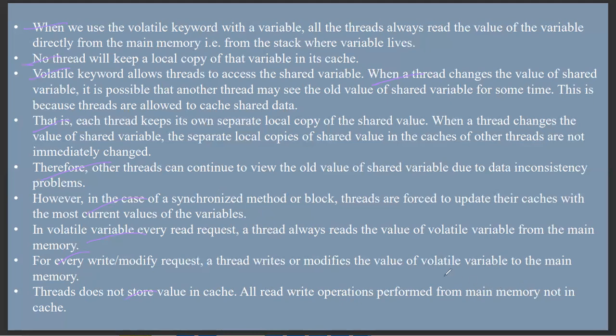In a usual thread, it takes the value of a shared variable and also maintains the local copy of data in the cache. But in a volatile variable, every read, write, and modify operation is directly performed from the main memory. This is a major difference.